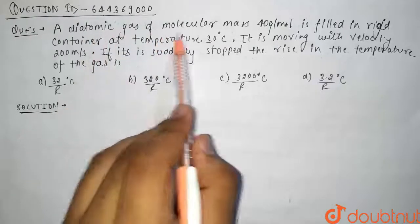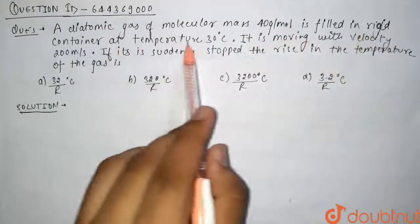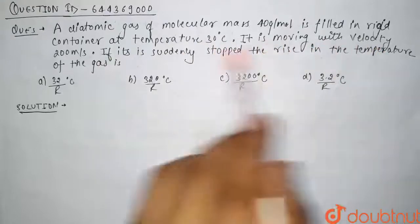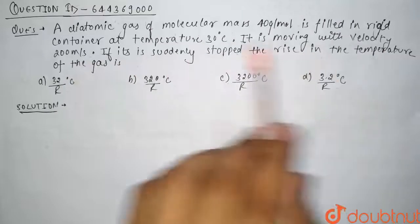a diatomic gas of molecular mass 40 grams per mole is filled in a rigid container at temperature 30 degrees Celsius. It is moving with velocity 200 meters per second. If it is suddenly stopped, the rise in temperature of the gas is